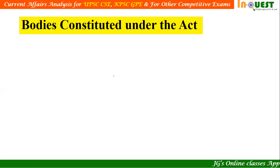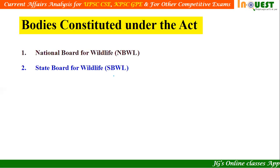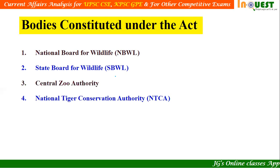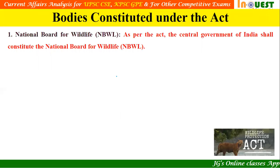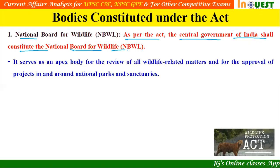There are five bodies constituted under this act: number one, National Board for Wildlife; number two, State Board for Wildlife; number three, Central Zoo Authority; number four, National Tiger Conservation Authority; and number five, Wildlife Crime Control Bureau. As per the act, the central government of India shall constitute the National Board for Wildlife.